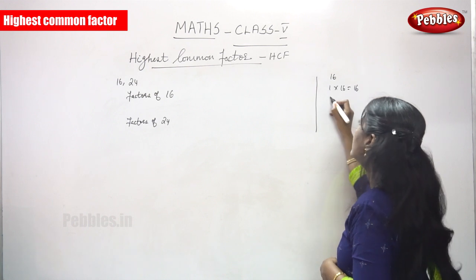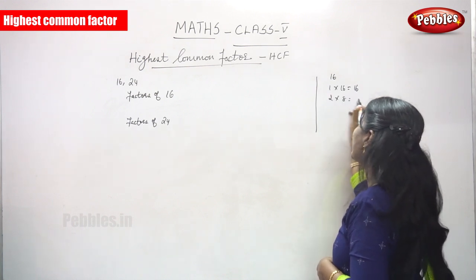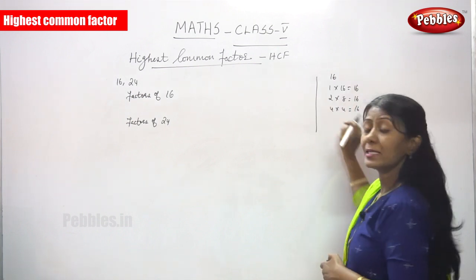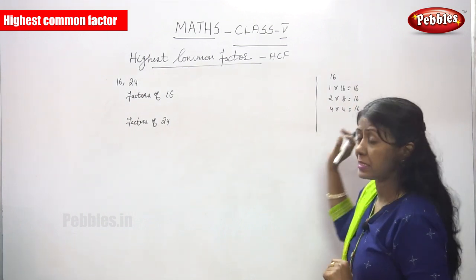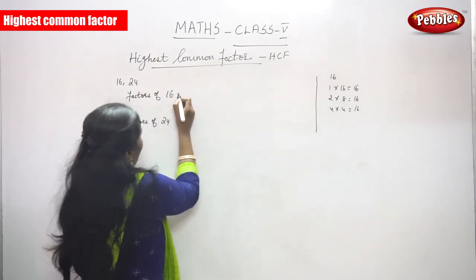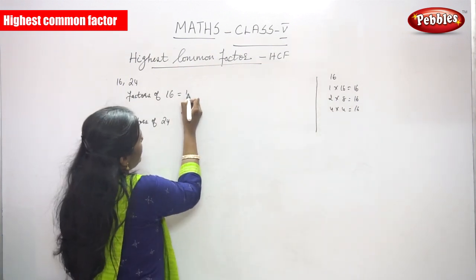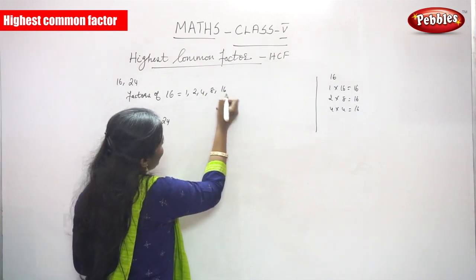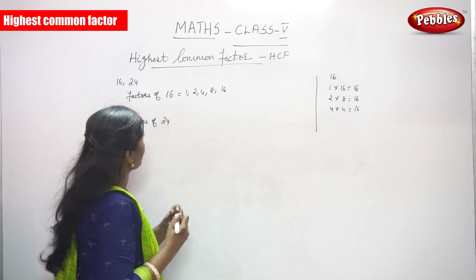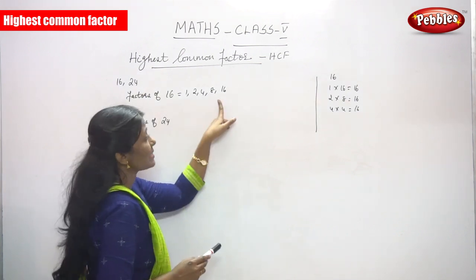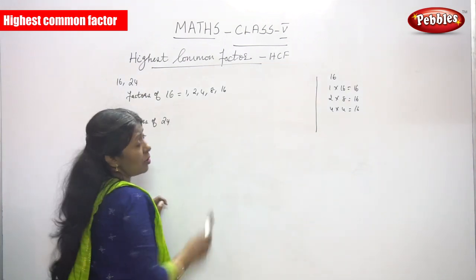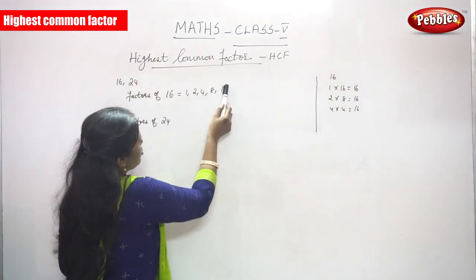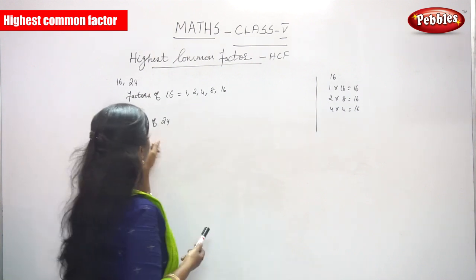1 × 16 = 16, 2 × 8 = 16, and 4 × 4 = 16. So these are the possible factors for 16: 1, 2, 4, 8, and 16. Note that 16 is also a factor of itself — the same number is a factor of itself.